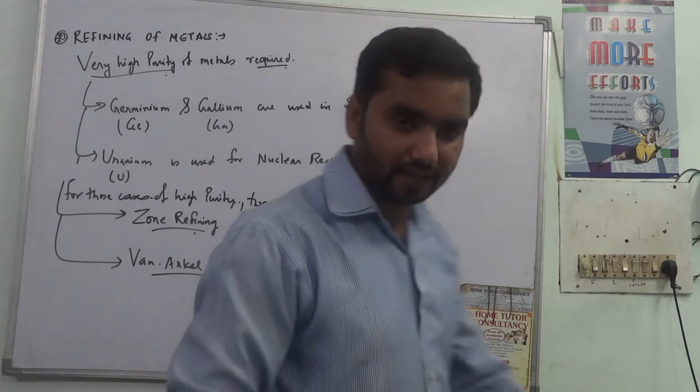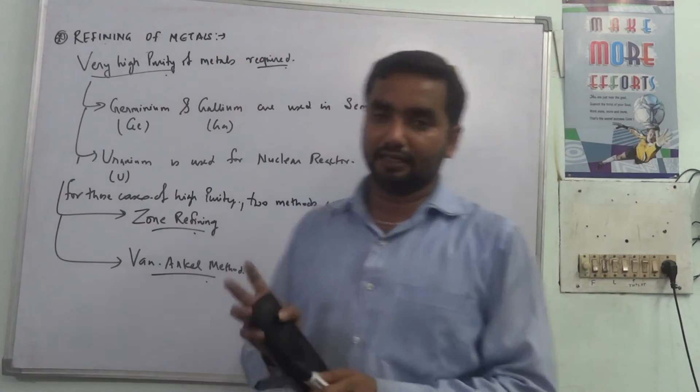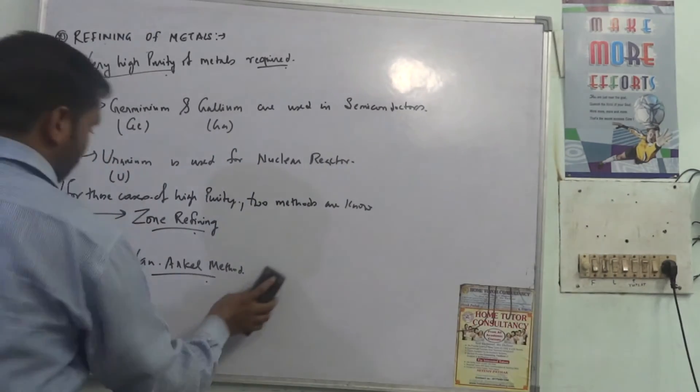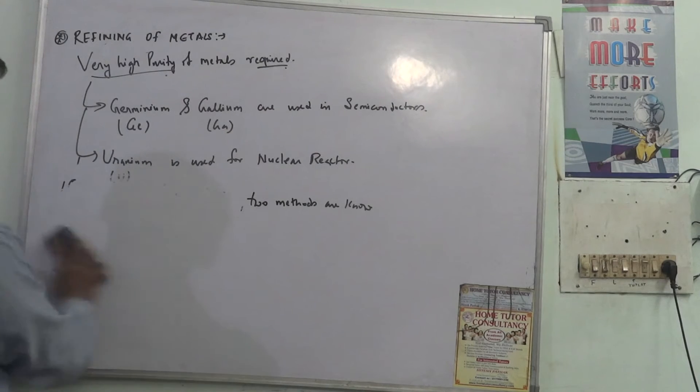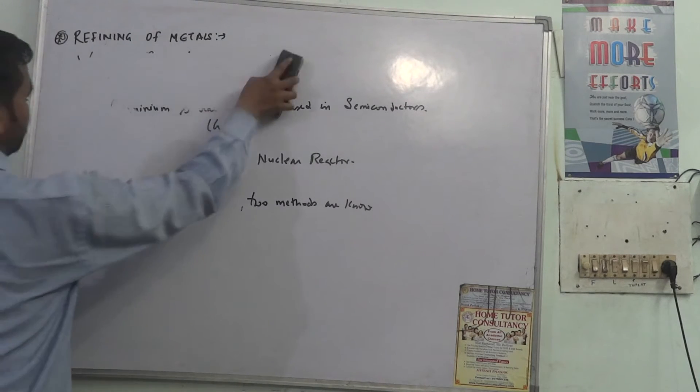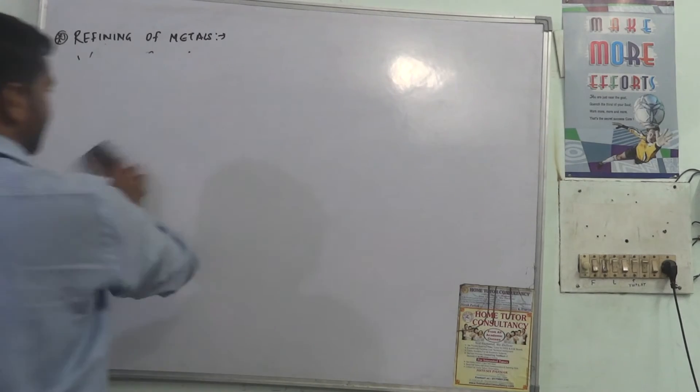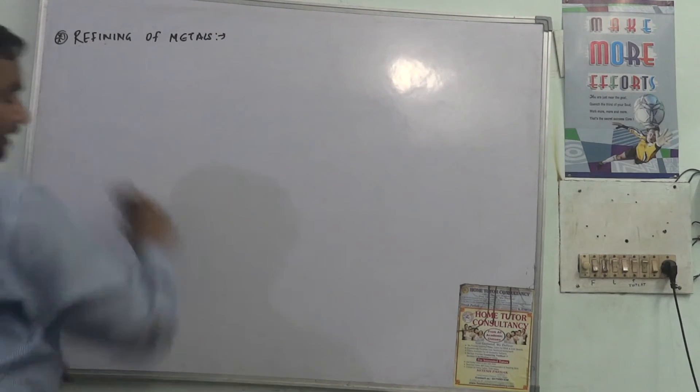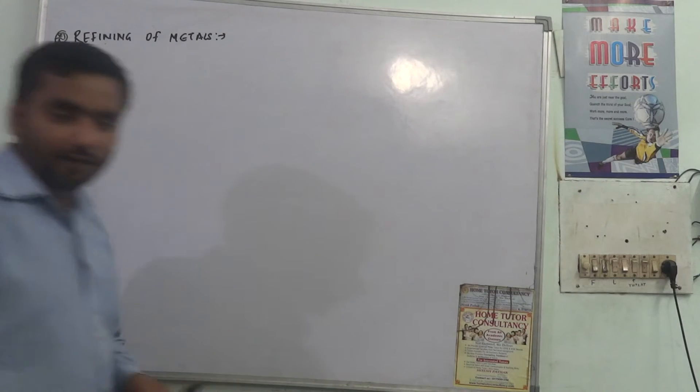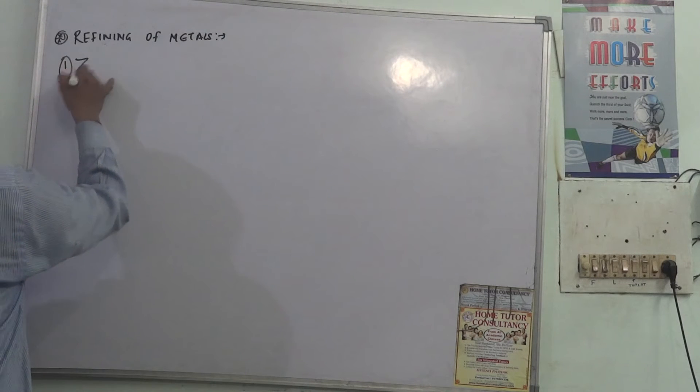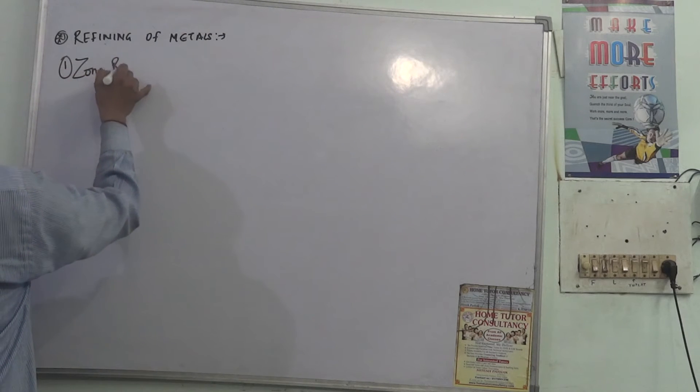These are the two methods by which we will get the high purity or the highest purity of metal refined by it from its crude metal. I will discuss one by one about these two methods of high purity metals refining. First is zone refining and second is Van Arkel method.